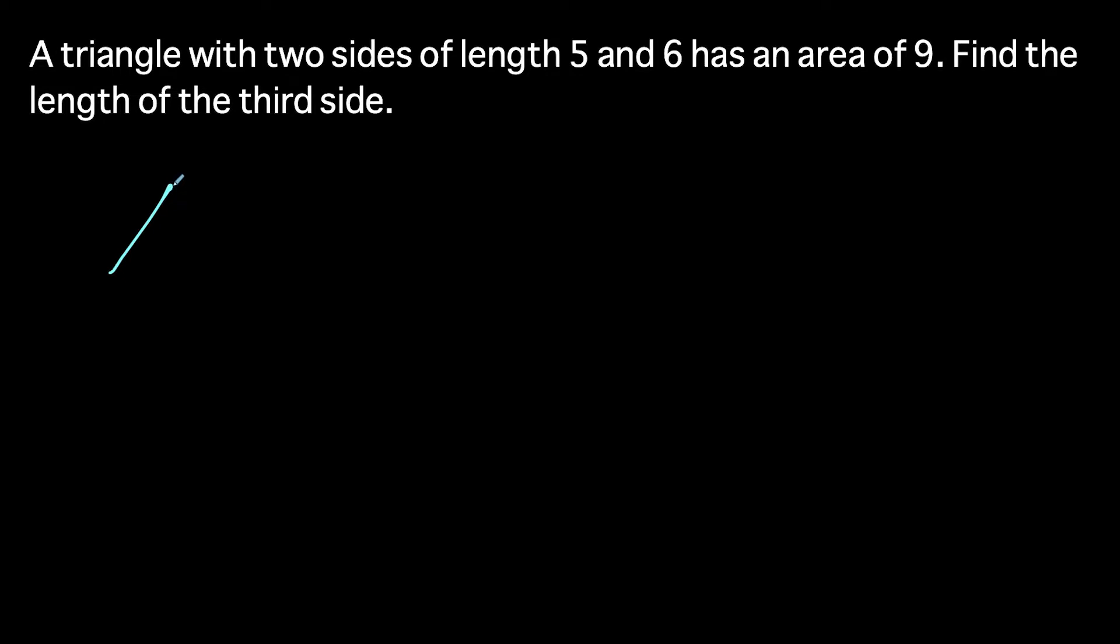So what we could do here is just draw something out. So we have a triangle, and we know that two sides are five and six units long. And we know the area of this triangle is nine square units.